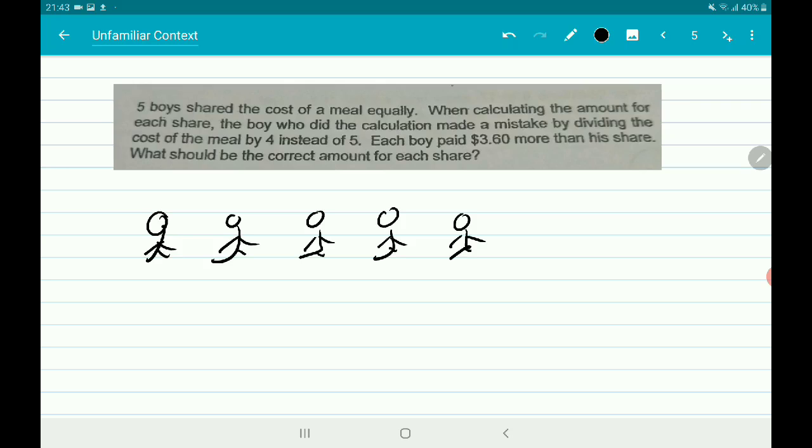When calculating the amounts for each share, the boy who did the calculation made a mistake by dividing the cost of the meal by 4. So there are only 4 boys who are paying. Then the 5th person is not paying.